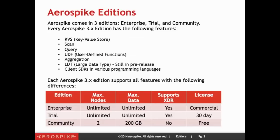The Trial edition, which is free for 30 days, also includes an unlimited number of nodes and an unlimited amount of data, and it also supports XDR, but it's only good for 30 days. The Community edition, which is our free tier, includes support for up to two nodes and 200 gigabytes of data, but does not support XDR.